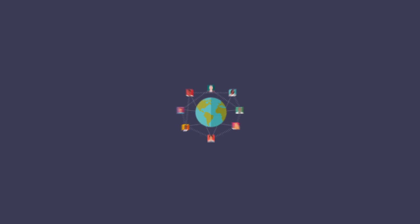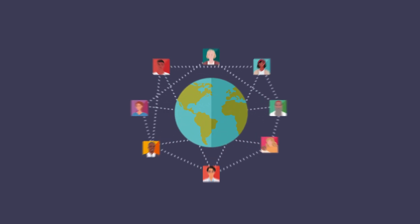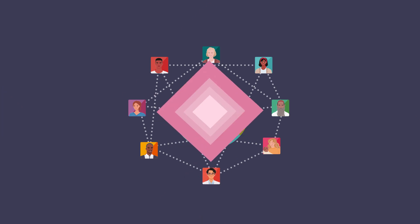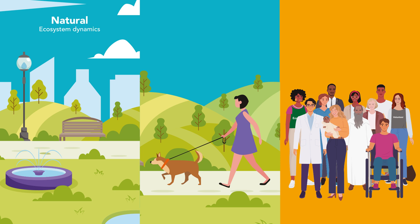Second, the user consults scientists and other experts to map the real-world systems in play and processes that may be affected. These could be natural, such as ecosystem dynamics; personal, such as experiences of wellbeing; and cultural, such as social life, the economy and dynamics of care.